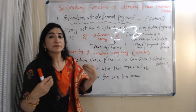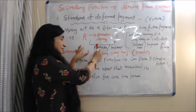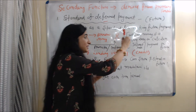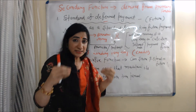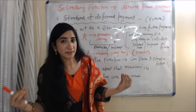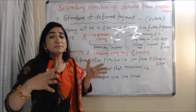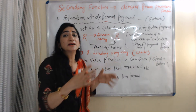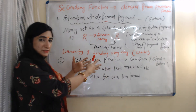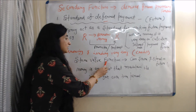Standard of deferred payment means money acts as a standard for making future payments. For example, when you borrow money from someone, after some time period you have to return both the principal as well as the interest amount. With money, it is very easy to calculate the interest rate and make future interest payments. In short, money makes our credit transactions very easy.